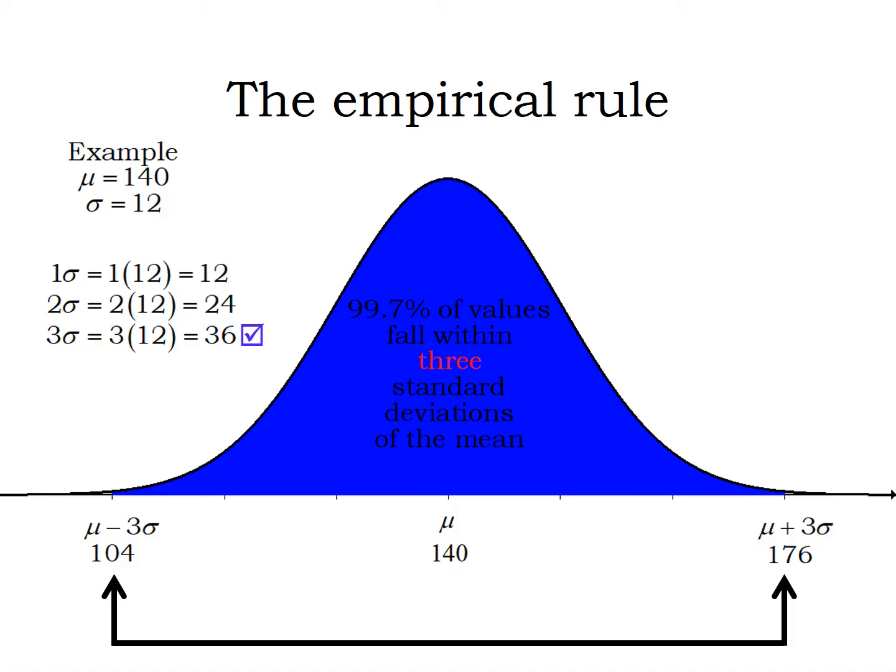If we take that 68%, 95%, and 99.7% and subtract them from 100%, we get the percentage that would be outside one, two, and three standard deviations respectively.